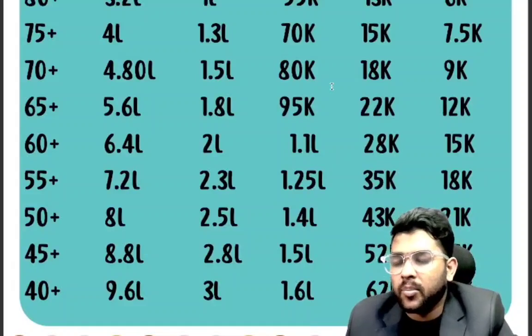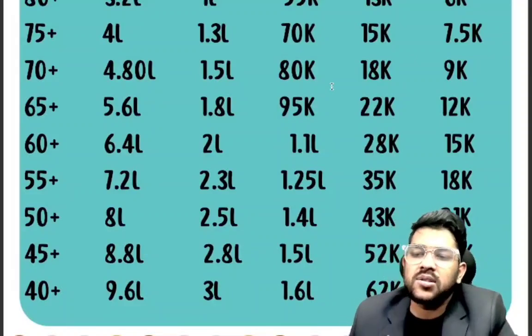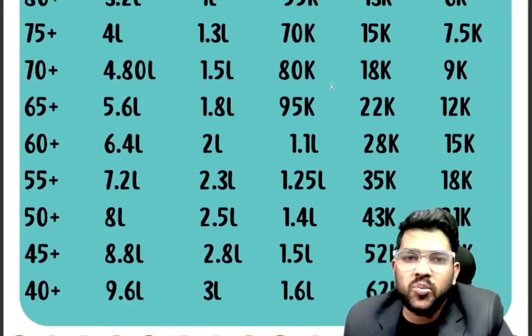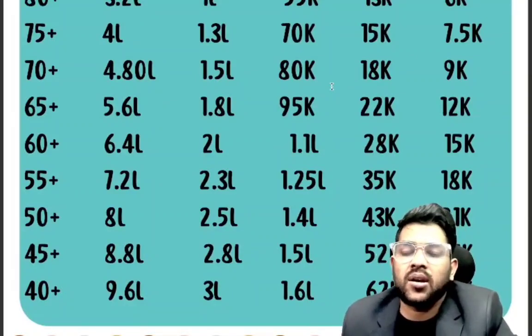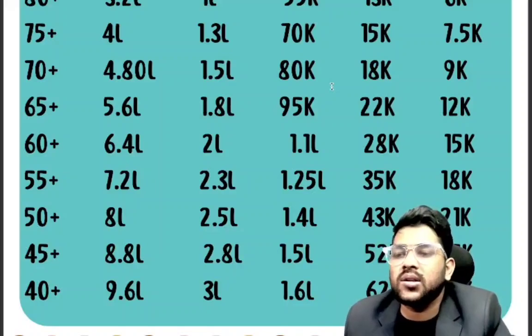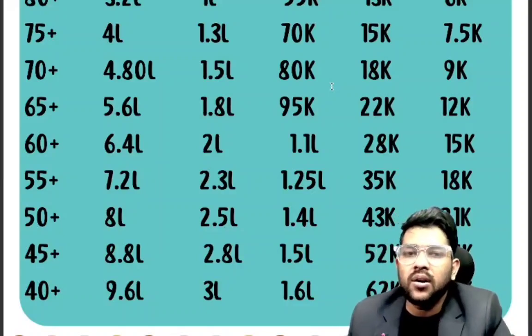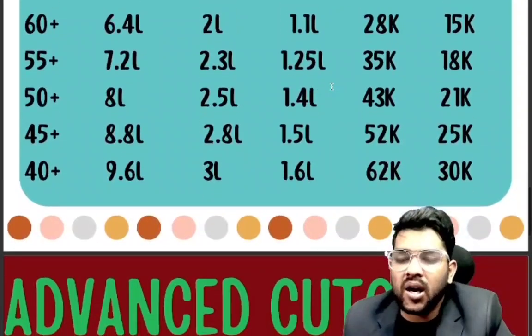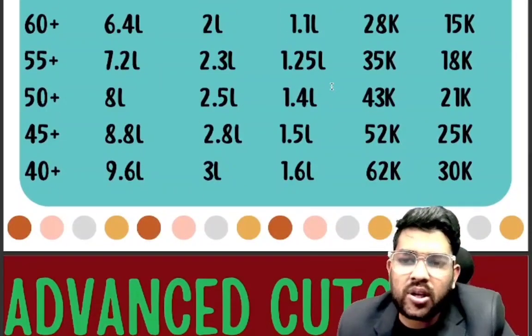This was about percentile versus your category rank — that is general, EWS, OBC, SC, ST rank. If you are from any category, you will get two ranks: CRL (common rank list) and your category rank. Now I will discuss the JEE Advanced cutoff percentile.